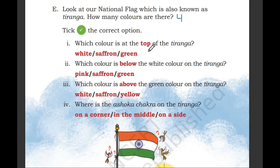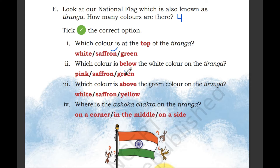Which color is at the top of the Tiranga? Saffron. Which color is below the white color on the Tiranga? Green. Which color is above the green color on the Tiranga? White.